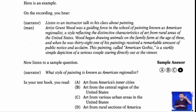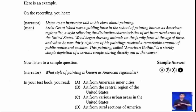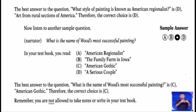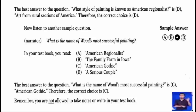What style of painting is known as American Regionalist? In your test book you will read: A) art from America's inner cities, B) art from the central region of the US, C) art from various urban areas in the US, D) art from rural sections of America. The best answer to the question is D, art from rural sections of America. Therefore, the correct choice is D.